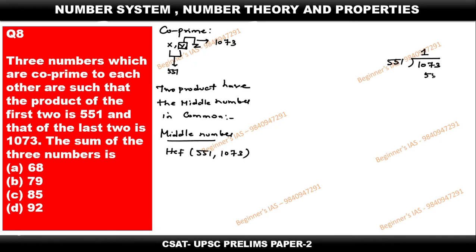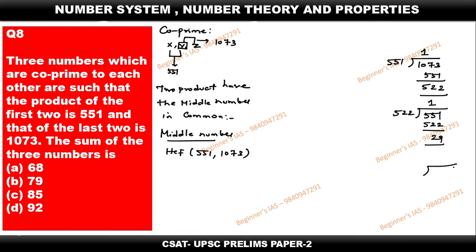1073 divided by 551 gives 1 time with remainder 522. Since the remainder is less than the divisor, we now divide 551 by 522, giving remainder 29. The remainder is still not 0, so we continue — divide 522 by 29.